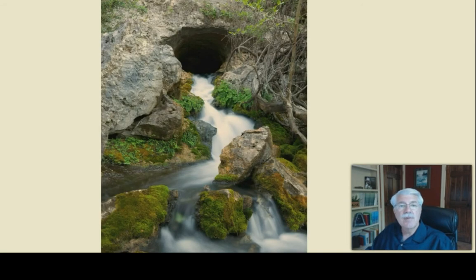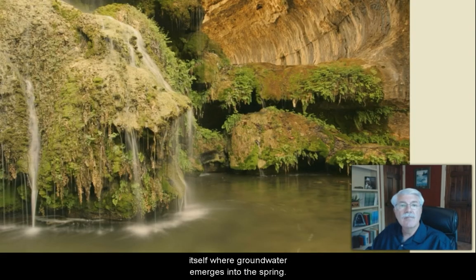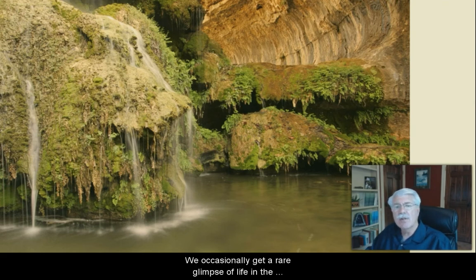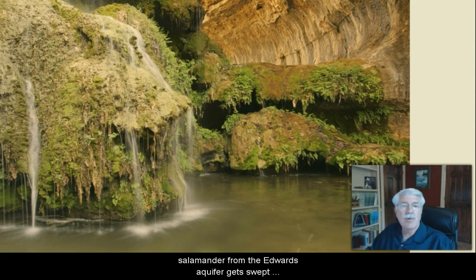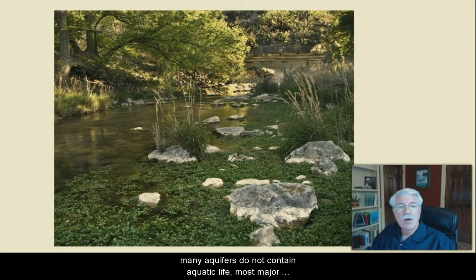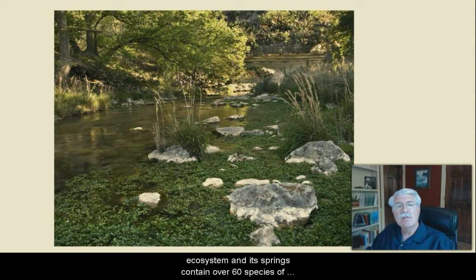The aquifer ecosystem extends beyond the aquifer itself where it emerges into a spring. Here, the groundwater mixes with surface water in the spring, stream, rivers, and lake waters downstream. However, it is in the springs themselves — formed by the aquifer's emerging waters — where the unique underground ecosystem truly extends to the surface. We occasionally get a rare glimpse of life in these underground ecosystems when an invertebrate, fish, or salamander from the Edwards Aquifer gets swept out into a spring. You may see one of these odd creatures, or one of the predators that like to eat them, when you tour the San Marcos Springs in a glass-bottomed boat.